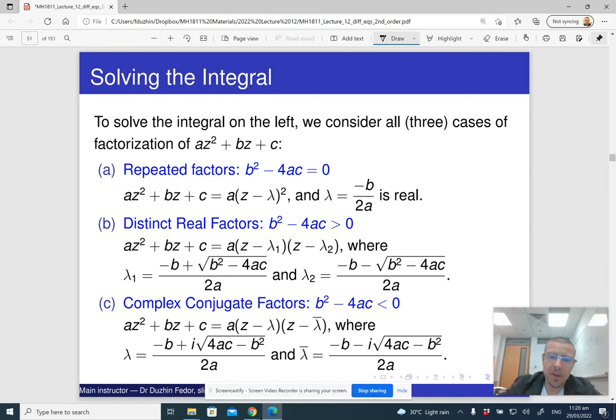Which is why when we do antiderivative, we are going to get essentially the division by z minus lambda. In this case, we are going to, when we do the antiderivative, we are going to have the two logarithms.